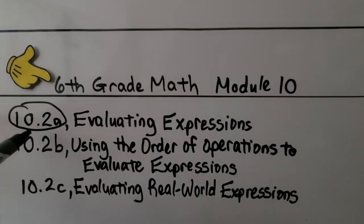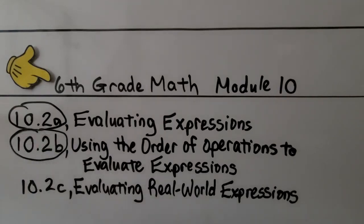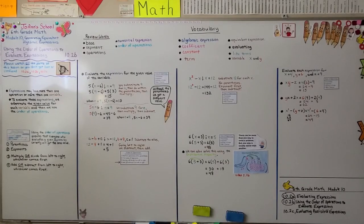We've finished this part and will do the last part next, which is evaluating real-world expressions. Just remember: when using the order of operations, multiplication or division goes left to right, whichever comes first; and addition or subtraction goes left to right, whichever comes first.